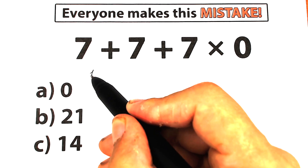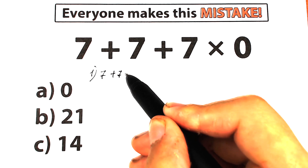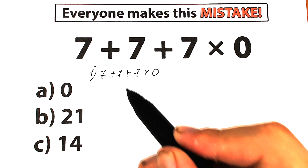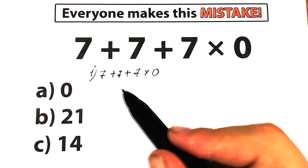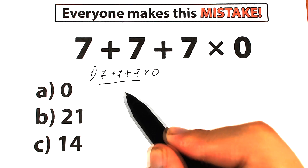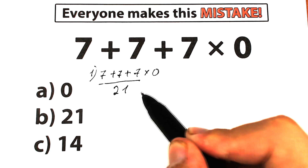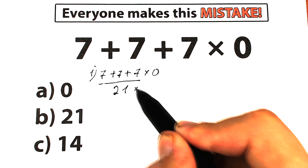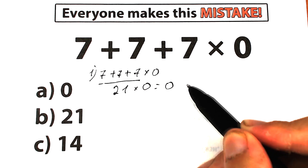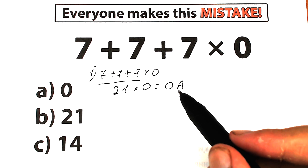Let's start with the first interpretation. We have 7 plus 7 plus 7 times 0. A lot of students don't care about order of operation — they solve challenges absolutely randomly, working in strict order from left to right. They say 7 plus 7 plus 7 equals 21, then 21 times 0 equals 0. A lot of students solve it like that and say option A is the correct answer.